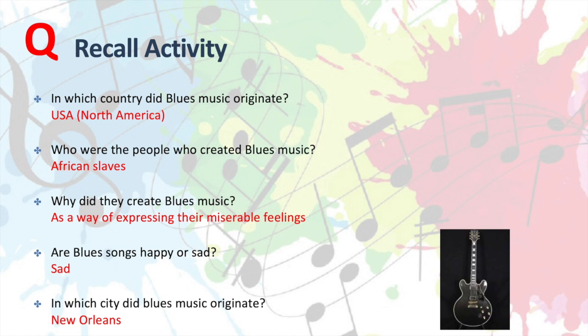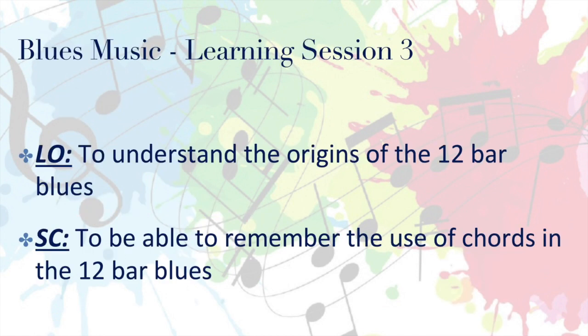And it travelled up the east coast to New York and to Chicago in the centre. So in Session 3, our learning objective is to understand the origins of the 12-bar blues. And our success criteria is to be able to remember the use of chords in the 12-bar blues.